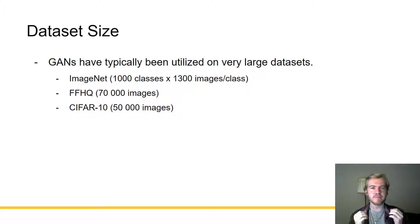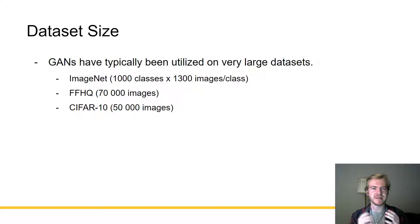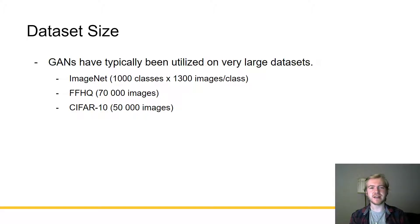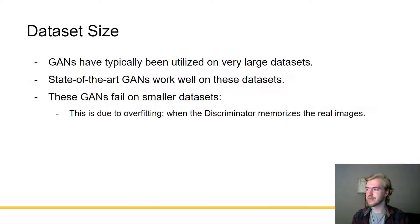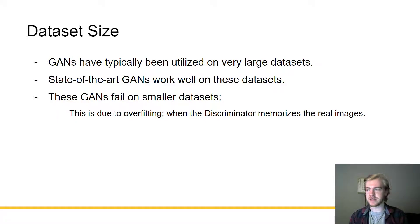Generative adversarial networks have a typically large data set size. These are commonly performed on data sets such as ImageNet, which has 1.3 million images; FFHQ, which is a series of faces with 70,000 images; or CIFAR-10, which has 50,000 images. These are very large data sets — data sets of this size aren't always reliable, and you can't always get data sets of this size. State-of-the-art GANs work really well on these data sets. However, these GANs will fail on smaller data sets.